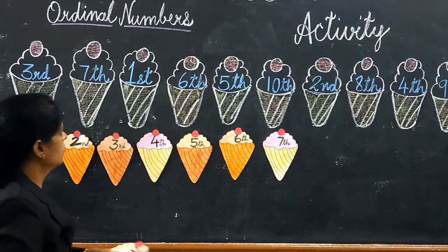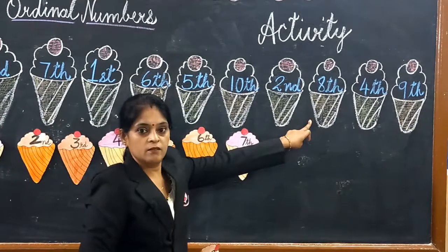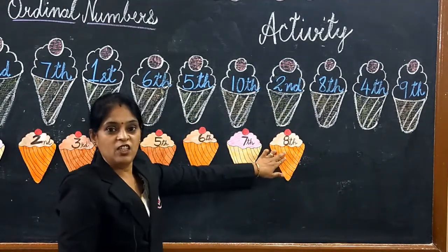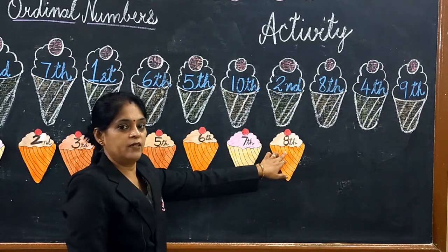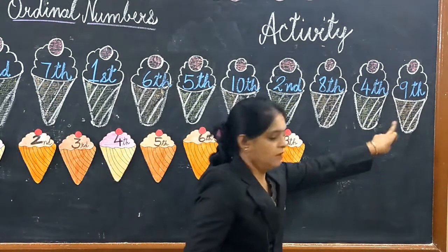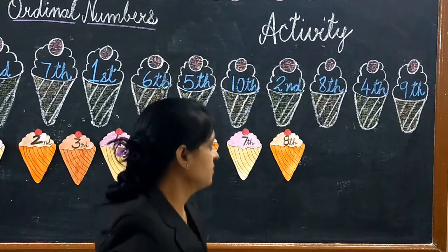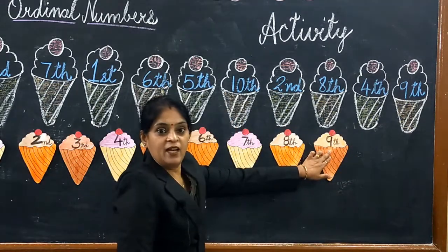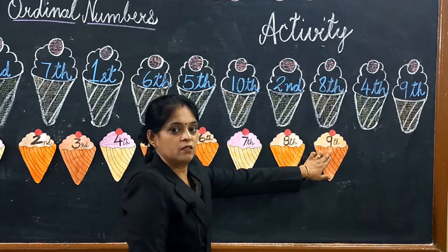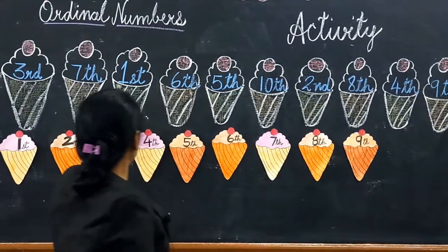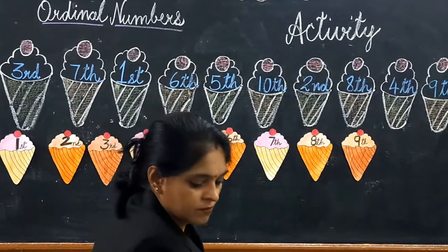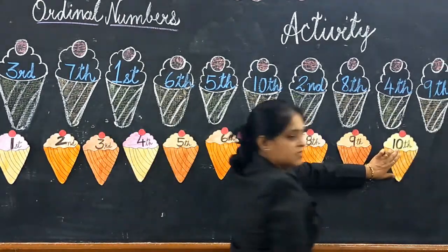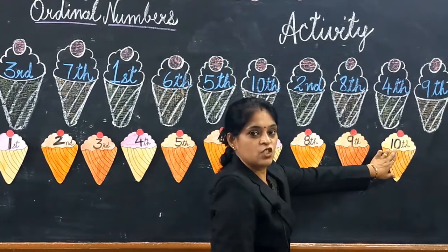Next number is eighth — E-I-G-H-T-H, eighth. Next number is ninth — N-I-N-T-H, ninth. Now the last number is tenth — T-E-N-T-H, tenth.